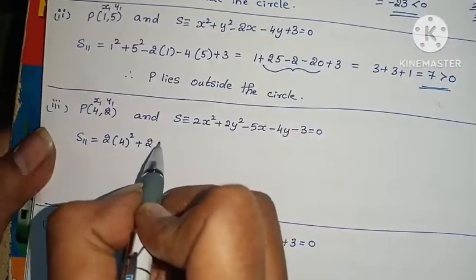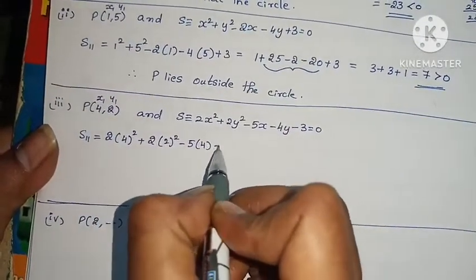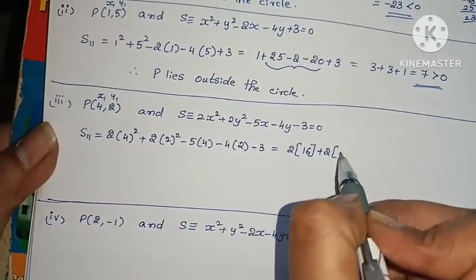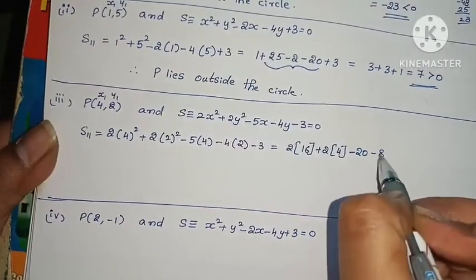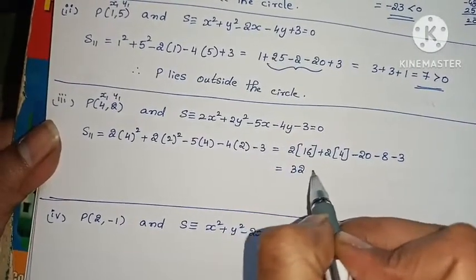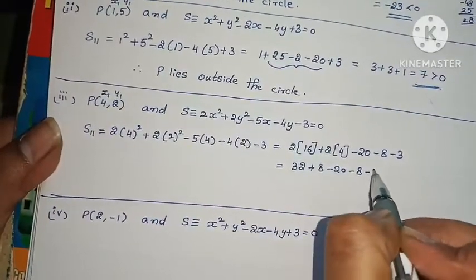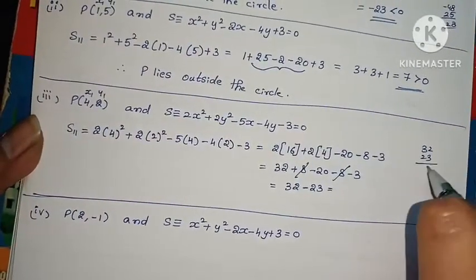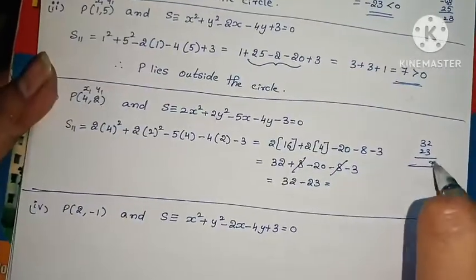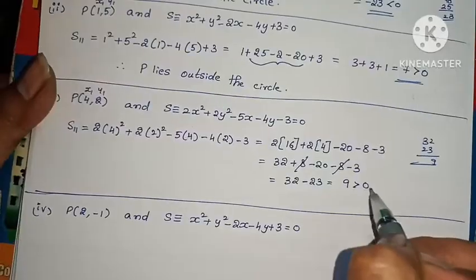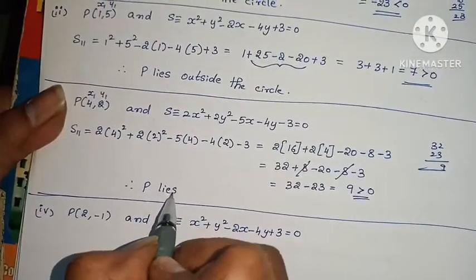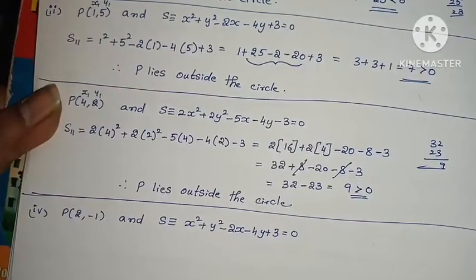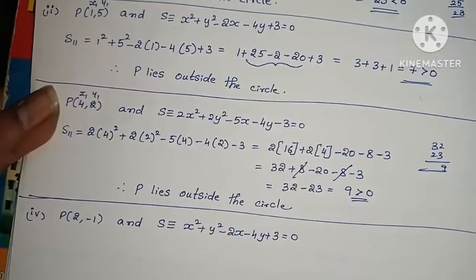That gives 25 plus 3 minus 22, which equals 7. Since this value is greater than 0, therefore P lies outside the circle. For the third point, S11 = 2 into x1 squared plus 2 into y1 squared minus 5 into x1 minus 4 into y1 minus 3.